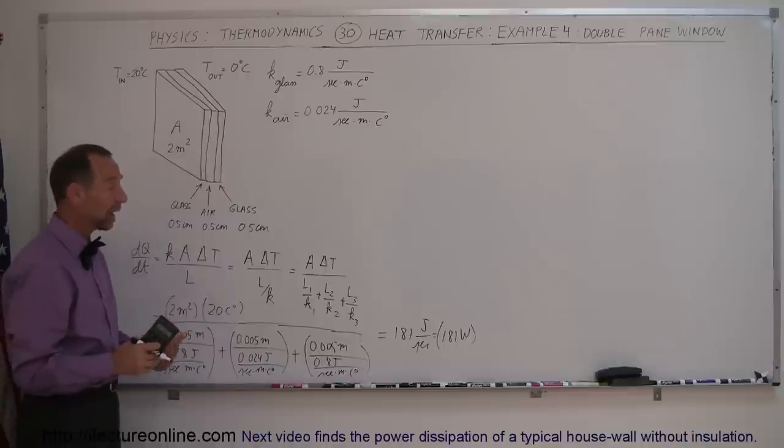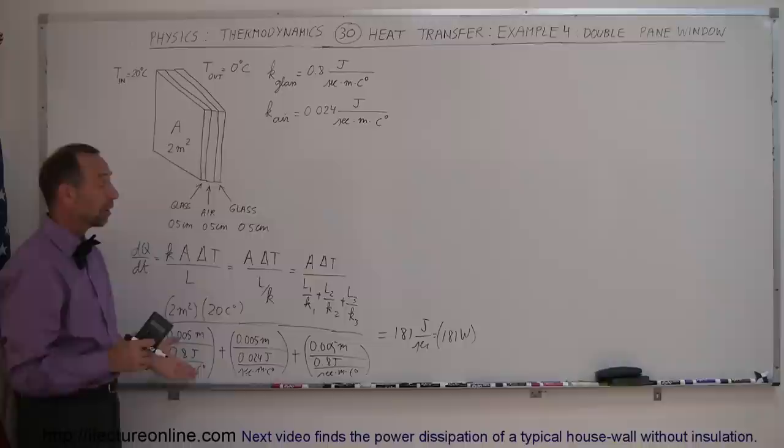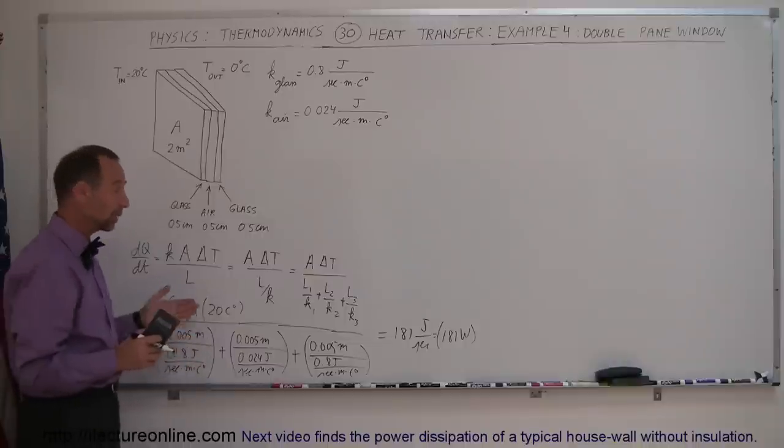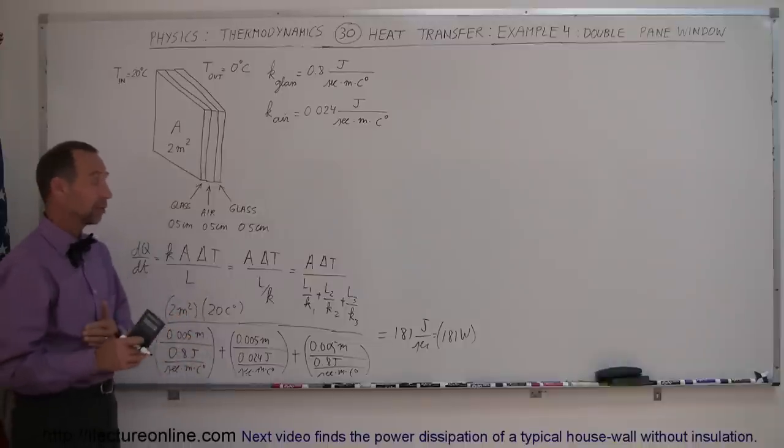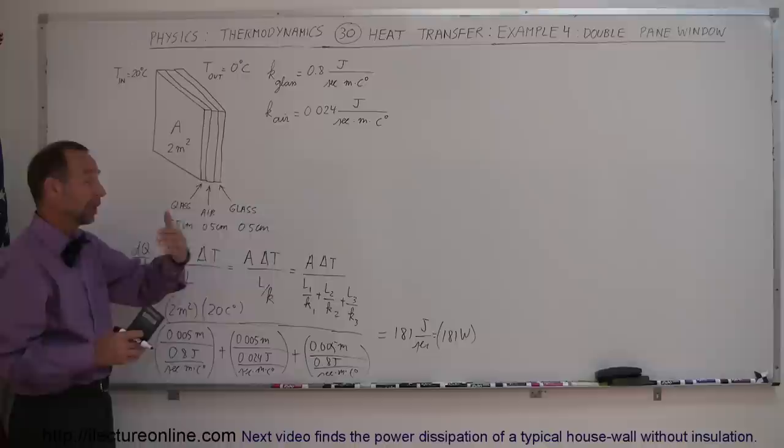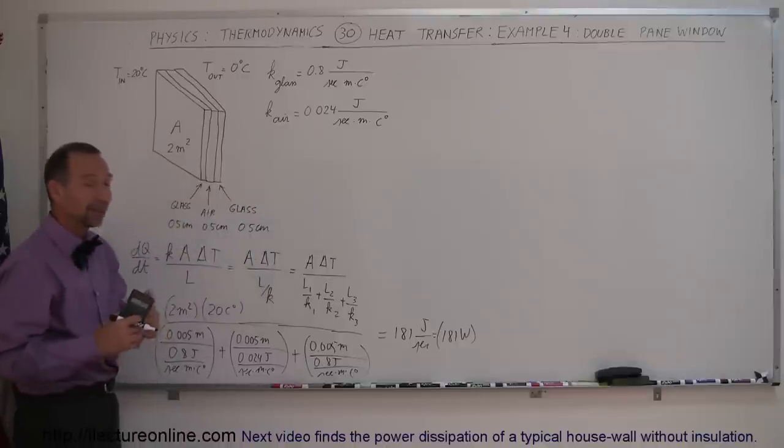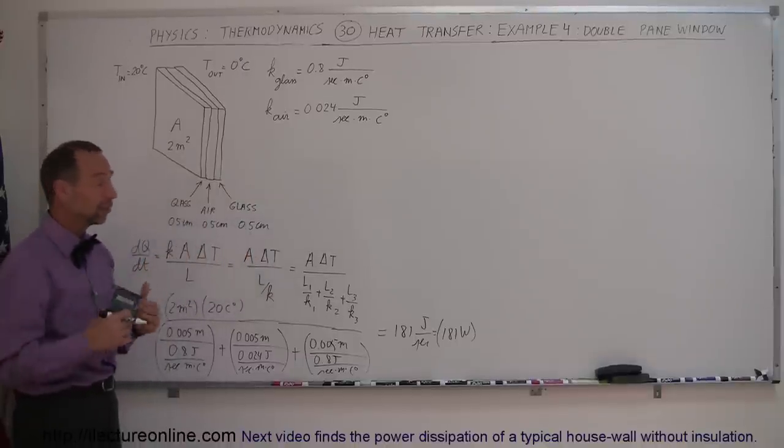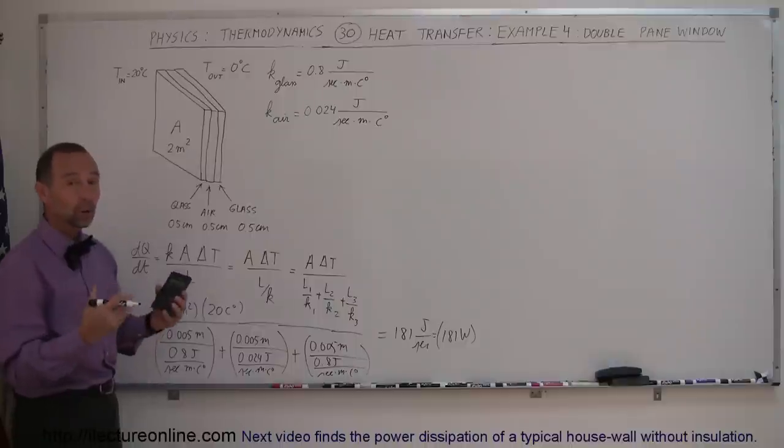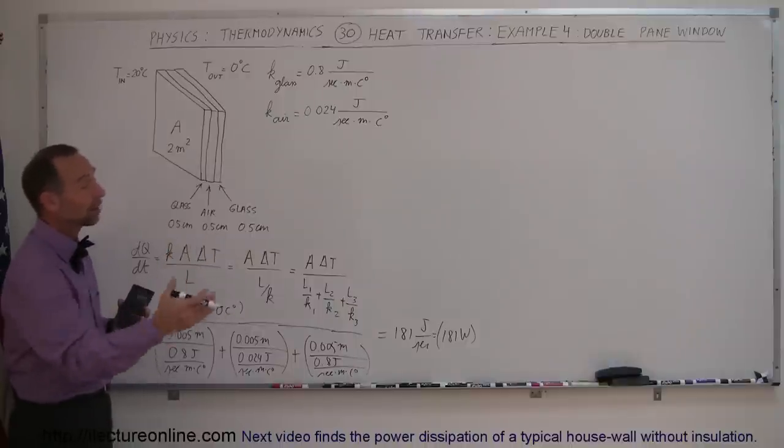If you want to have a well-insulated house, you definitely want to have double pane windows, especially if the difference in temperature between the inside and the outside is large. That could be in very hot deserts where you want to keep your house cool and it's very hot on the outside, so you don't want too much heat transferring into the house, as well as in a very cold climate where you don't want too much heat traveling outside the house.